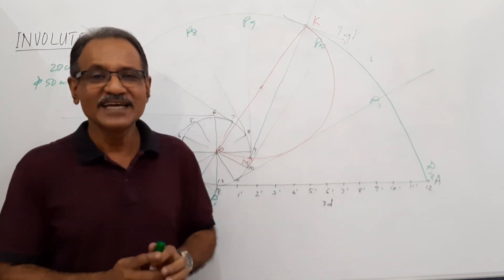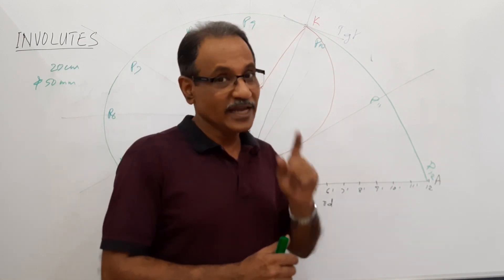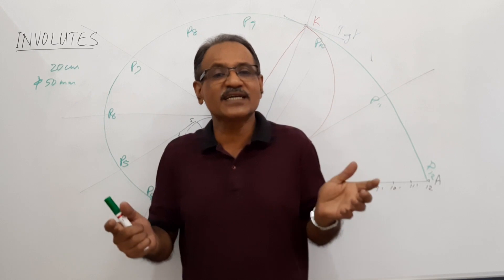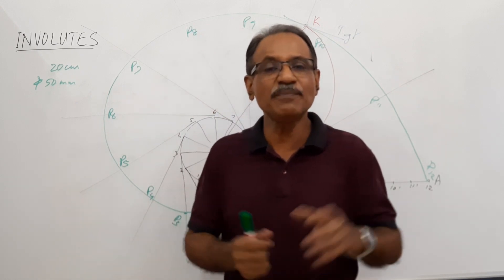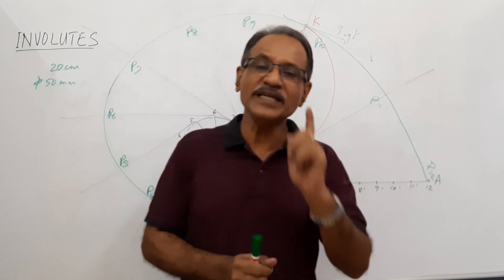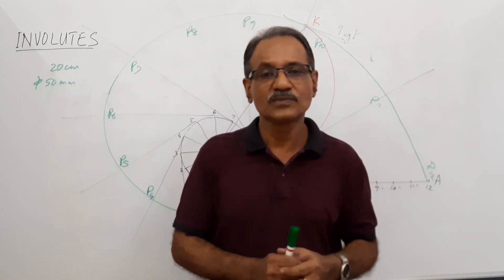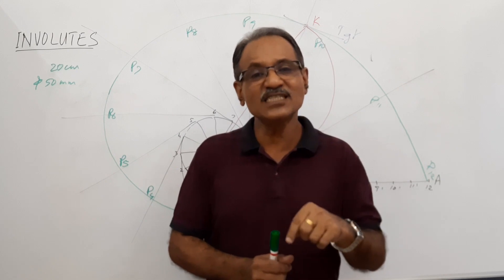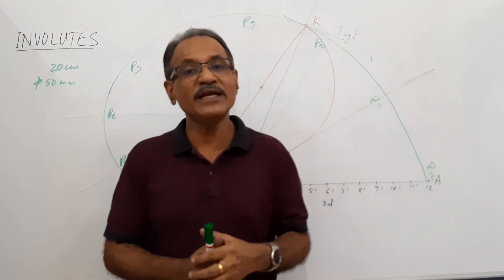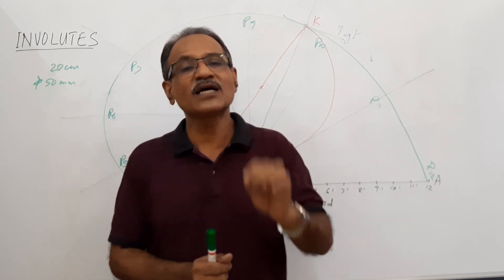The question is: a string 20 cm long is unwound from a circle whose diameter is 50 mm. Keep the string tight. You are asked to trace the path of the free end.